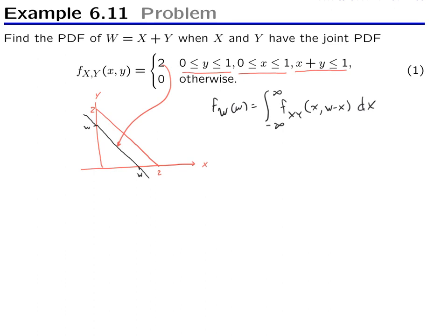And of course this joint PDF is zero except in this region, so the integral is only non-zero over this shaded zone across the triangle. So when we do some more algebra, you get this is equal to the integral zero to w, so x goes from zero to w, and over that region the PDF is 2 dx, and we obtain 2w.